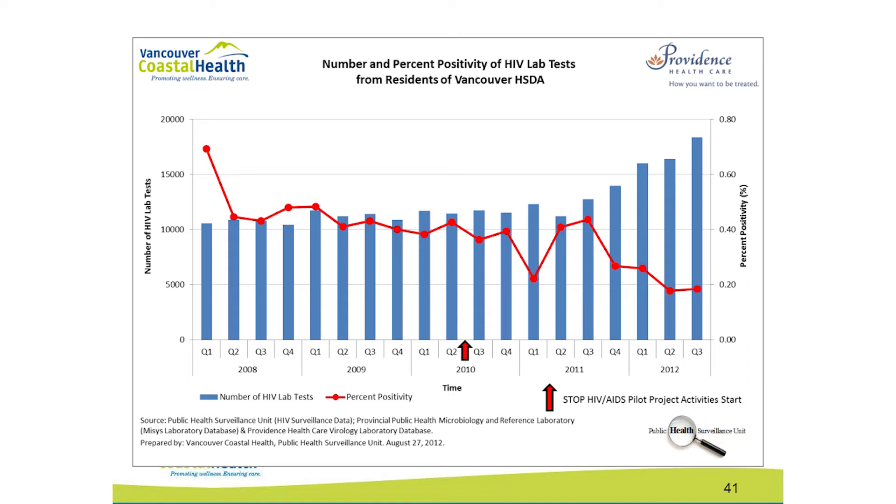This graph shows testing volumes across Vancouver since 2008, encompassing the historical comparison period. As most of our initial testing was focused on the high-risk population using very targeted testing, there was only a small increase in actual testing volumes, though we did see a bit of an increase in percent positivity because we were focusing on the high-risk population. Since quarter three of 2011, with the initiation of our routine testing strategy in acute care, there's been a significant jump in testing numbers — at least 50% in testing volume — due to the different strategies in acute care and the It's Different Now campaign.